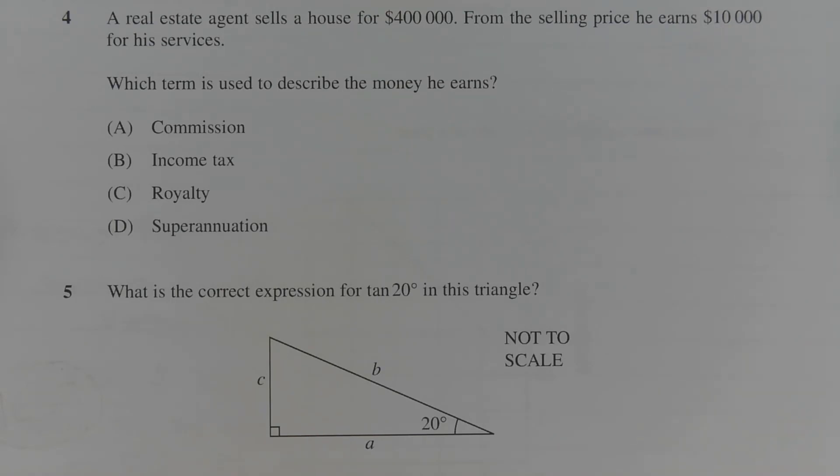The amount of money the real estate agent earns in this situation is based on the selling price of the house. Now, the selling price of the house is $400,000 and from that he earns $10,000. So it could either be interpreted as a fraction or a percentage of the selling price.